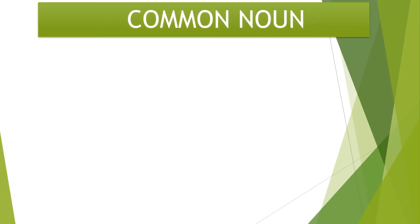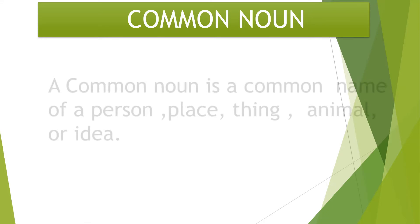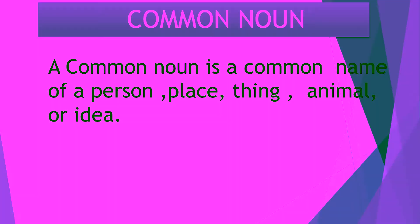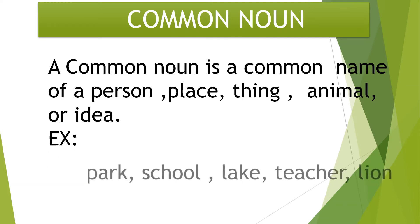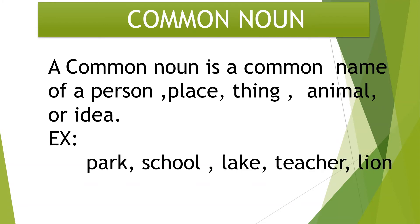There are two types of nouns: common noun and proper noun. Let's first learn about the common noun. A common noun is a common name of a person, place, thing, animal, or idea. Examples: park, school, lake, teacher, and lion.